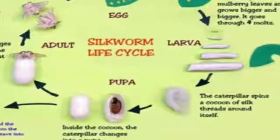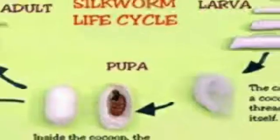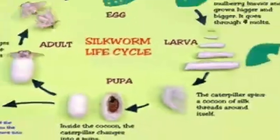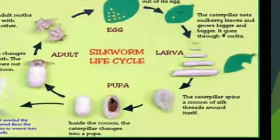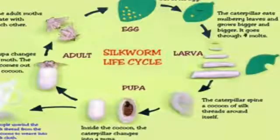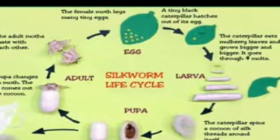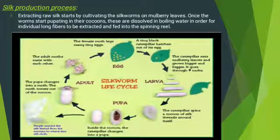Inside the cocoon, the caterpillar changes its shape — it curls and transforms into a pupa. When the pupa changes into an adult moth, the life cycle begins again.